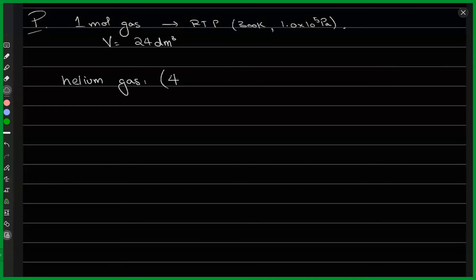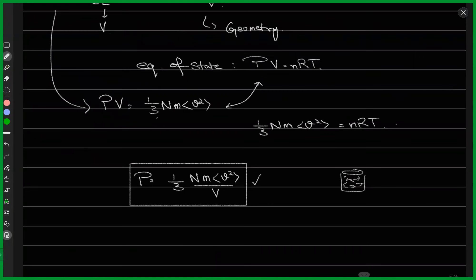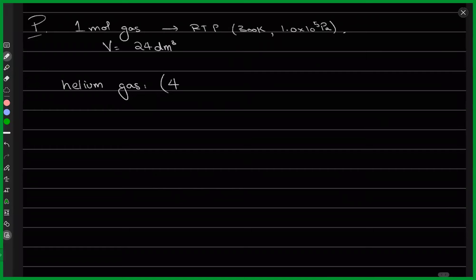All right, I'll assume there is no question. Last time we were solving a problem. What we did was talk about the relationship between the molecules' speed and the pressure exerted, and we derived a relation for that. We extended that to multiple molecules, and that's where the mean value of velocity squared came from.